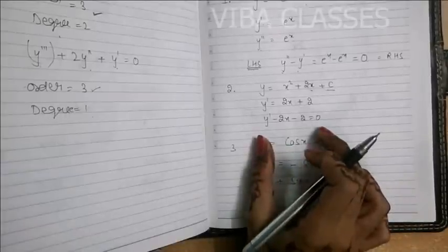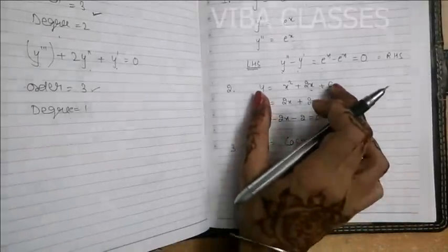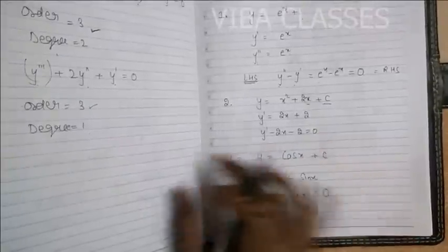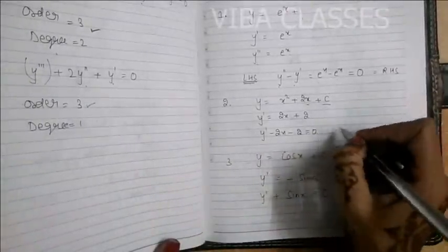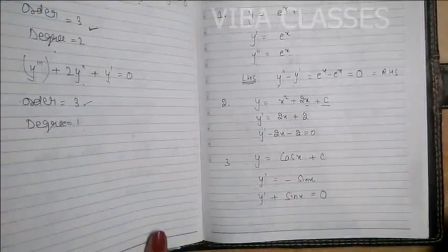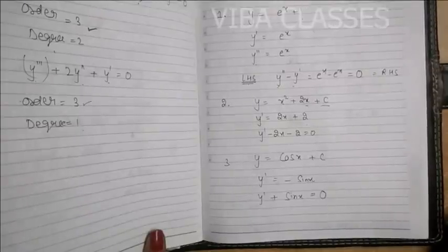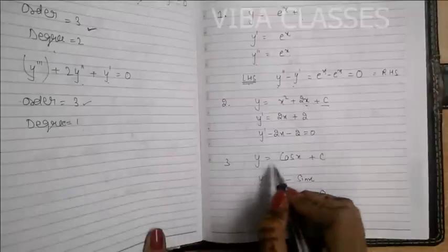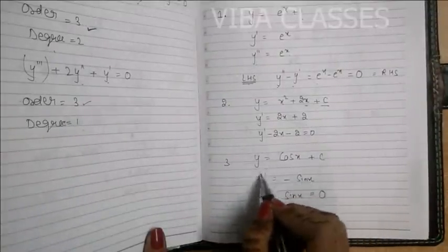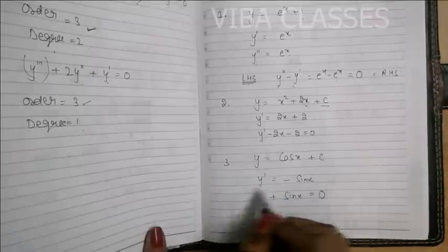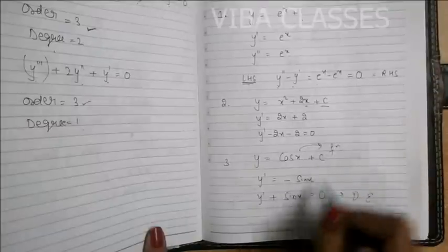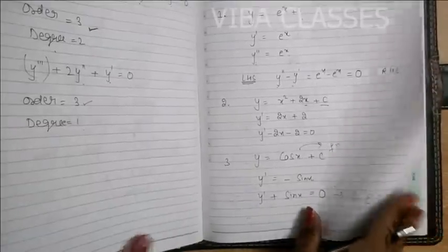Differential equation: what happens? A function is given, and after taking the derivative, the equation that comes is called the differential equation. To reach back from the differential equation to the function is basically n-th derivative, which is integration. So a differential equation is a special type of integration. Next: y = cos x + c. Taking the derivative: y' = −sin x. So y' + sin x = 0 is your differential equation.